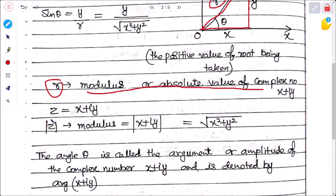The modulus is denoted |z| = |x + iy| = √(x² + y²). An important point to remember: the modulus of any complex number equals the square root of the sum of the square of the real part and the square of the imaginary part.